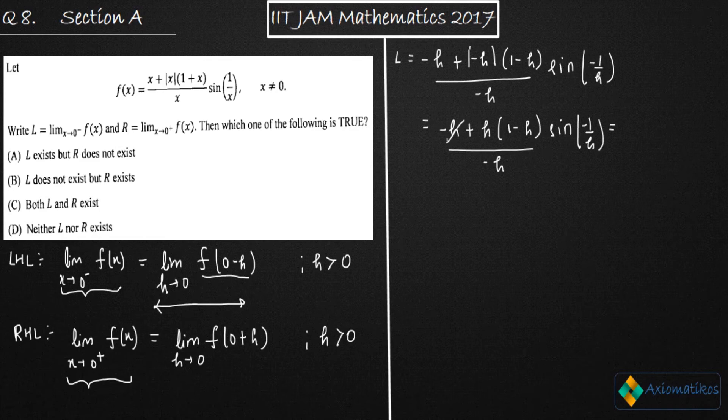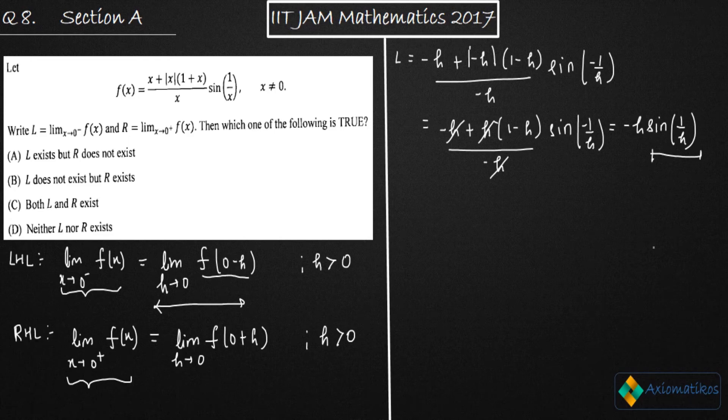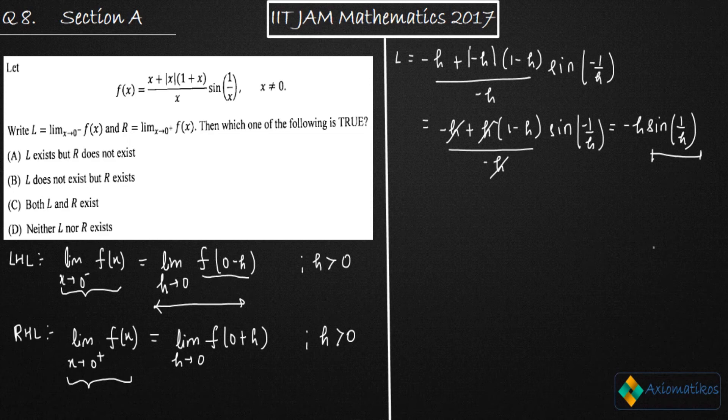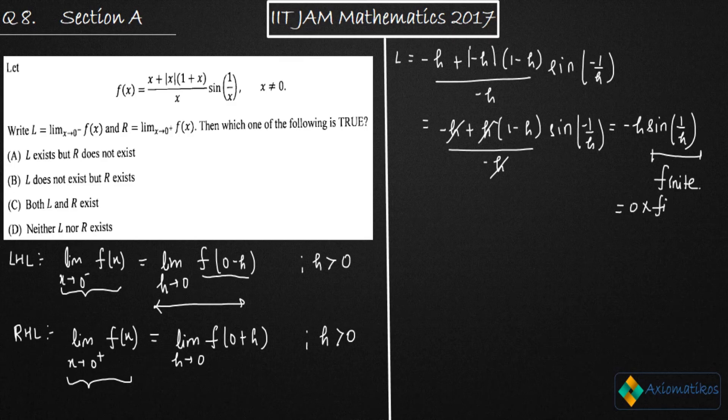If you will cancel this h from here, you will get minus h times of sine one over h. Now, you're trying to figure out the limit where h goes to zero. If h goes to zero, this thing will go to sine infinity. What do you know about the sine function? The value of sine will always lie between minus one and one. That means we don't know what this value is, but we know that this value is a finite number. Therefore, zero into some finite number will end up with zero.